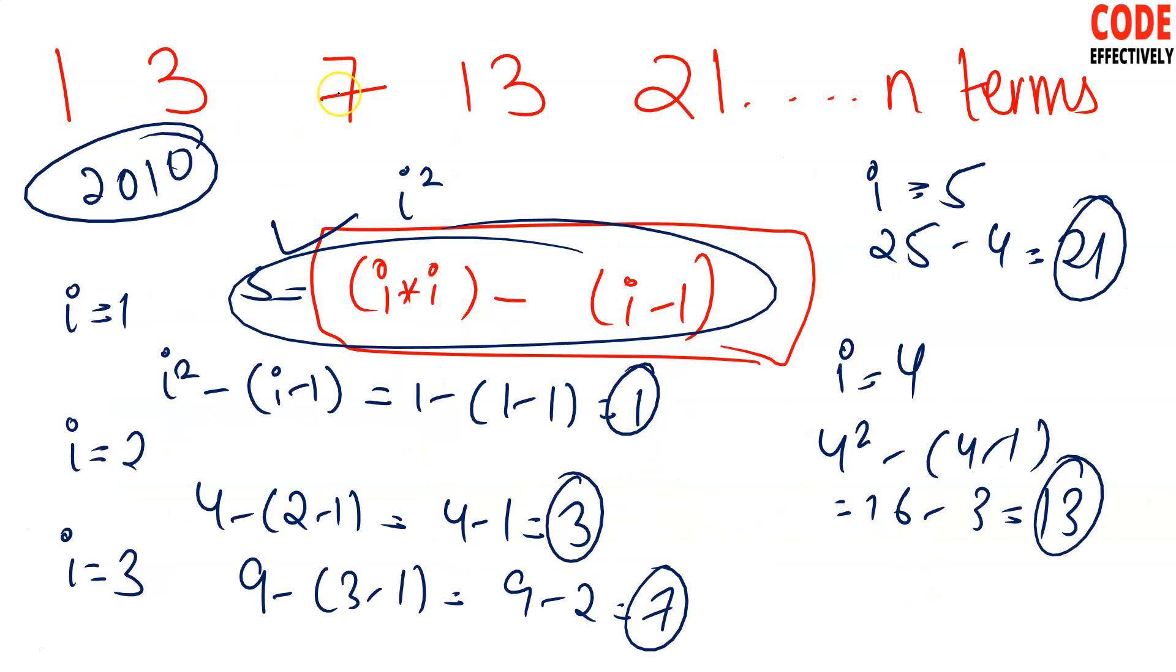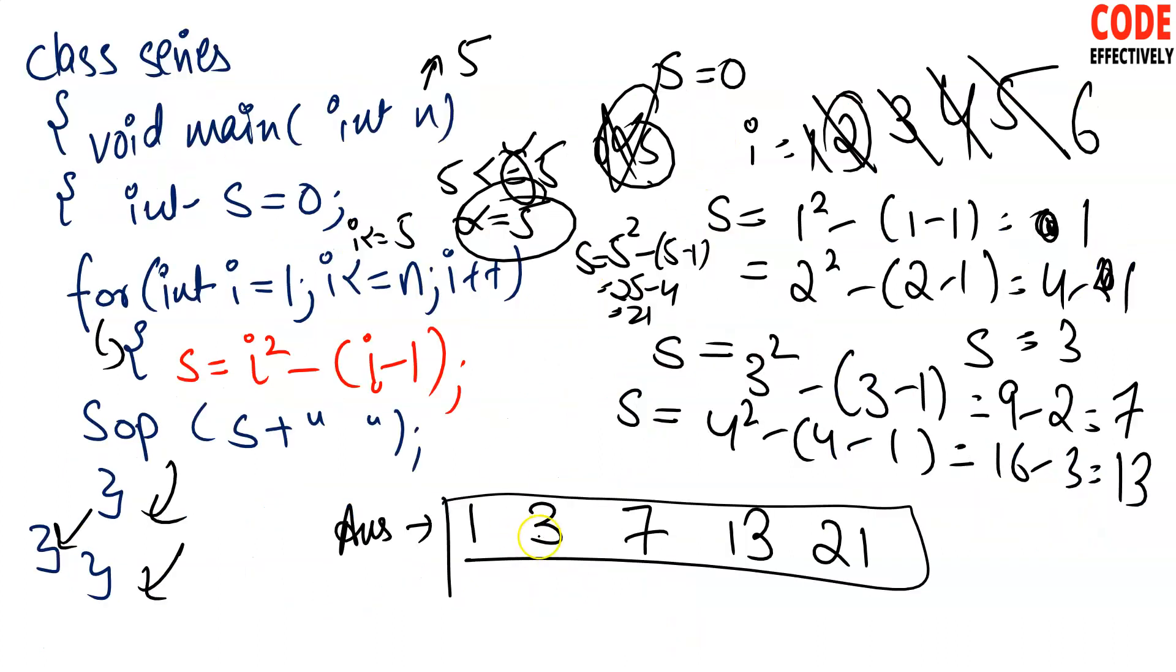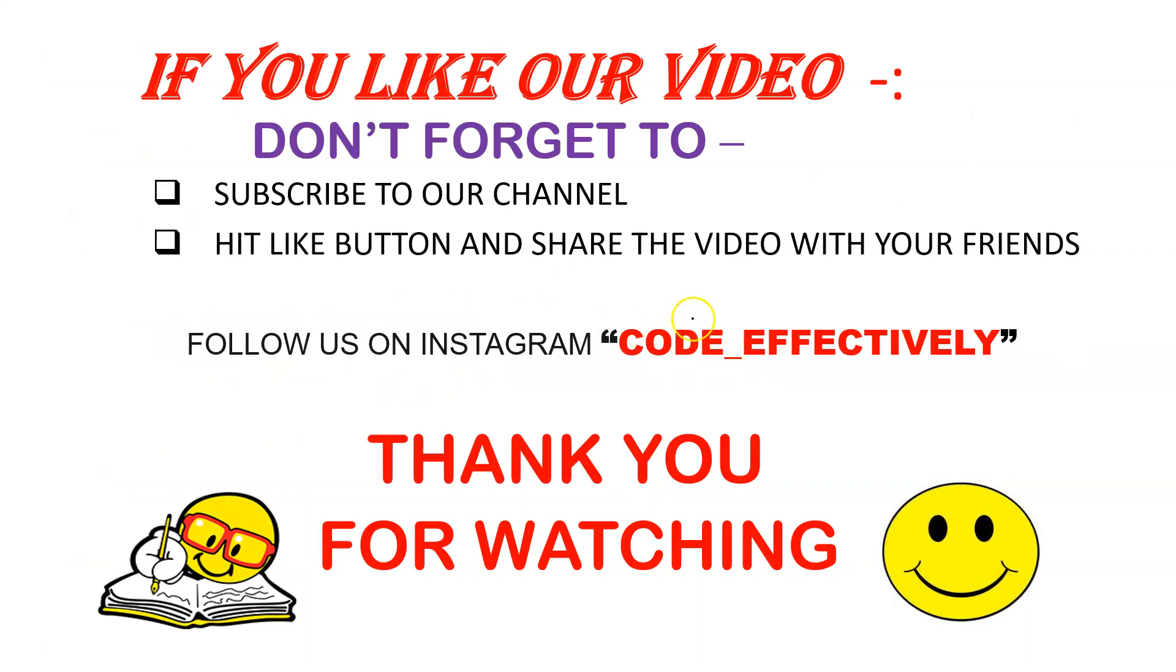We have got this print: 1, 3, 7, 13, 21. Here is the answer. So it was a very easy video, just you need to do this formula with this series. So you have to do this program. I request in the copy you have to maintain your rough copy, this series and your formulas. That is more than sufficient for you. If you like this video, go and subscribe to the Code Effectively channel and don't forget to follow me on Instagram. Thank you for watching and please press the subscribe button.